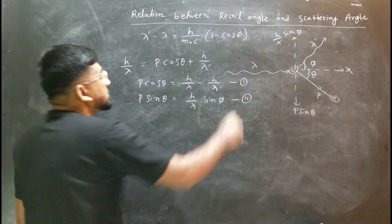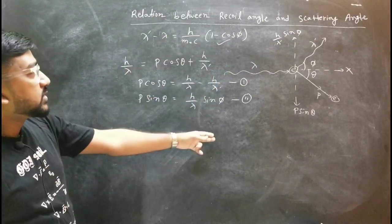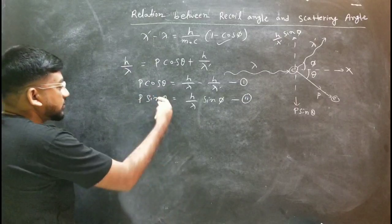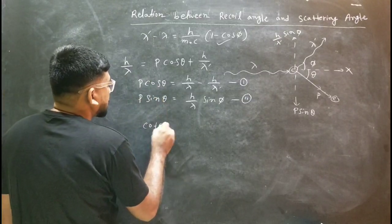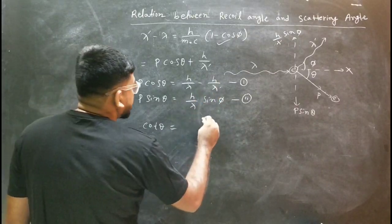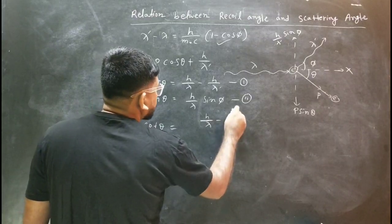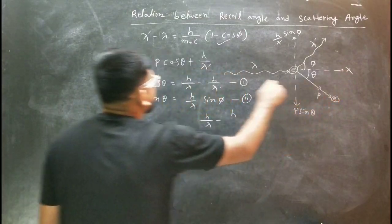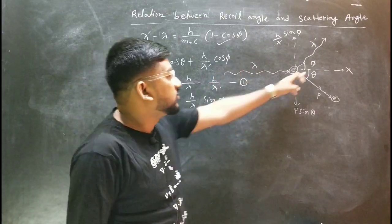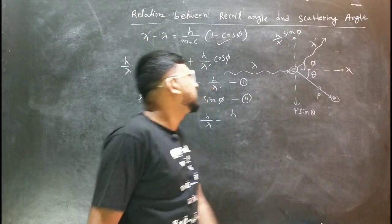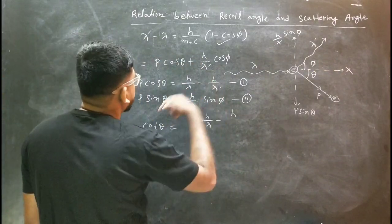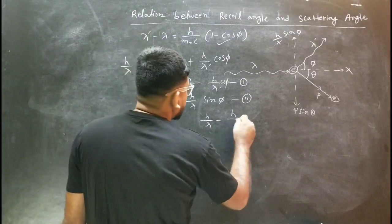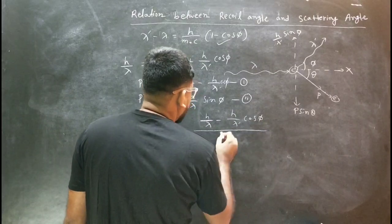Dividing equation 1 by equation 2, we get cot theta equals (h/lambda minus h/lambda dash cos phi) divided by (h/lambda dash sin phi). Note: a correction here — the x-component of the scattered photon includes the cos phi factor, so the expression in the numerator is h/lambda minus h/lambda dash cos phi.